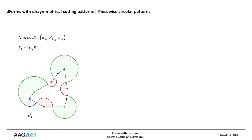Let C1 be the boundary curve of the first cutting pattern. It consists of n tangent arcs of circle A1i, defined by the three coupled parameters alpha1i, R1i, and L1i.